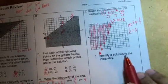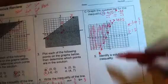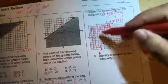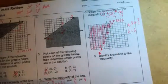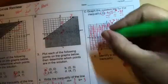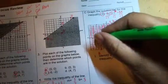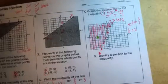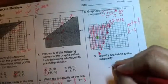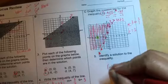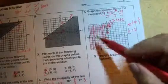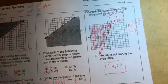So when it says identify a solution to the inequality, anything within this shaded region is a solution. So I'm going to pick this point right here, which happens to be negative 4, 0. And I could have picked anything inside of there. Okay, so that's inequalities.